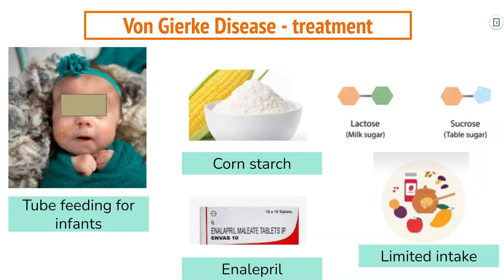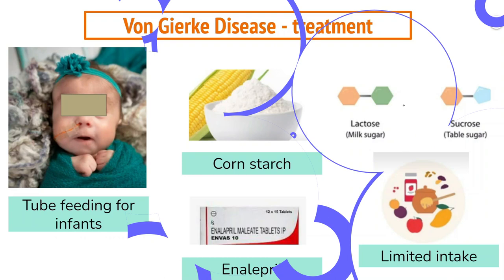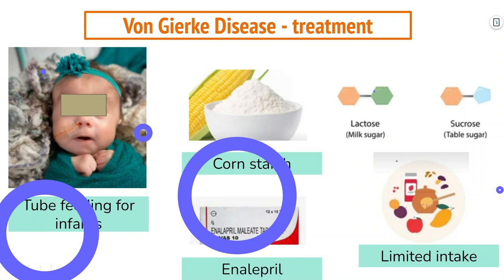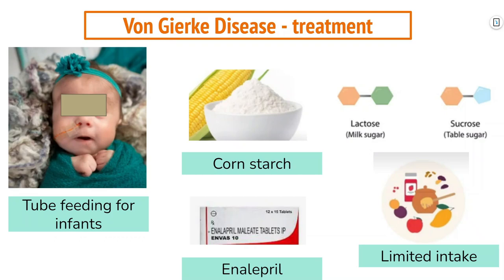The goal of treatment in this disorder is to maintain blood sugar. Frequent feeds are essential in infancy; overnight nasogastric drip feeding may be required to maintain blood sugar. An uncooked cornstarch-based diet is used in older children. Medium-chain triglycerides improve growth. Lactose, sucrose, and fructose should be restricted in the diet as they are metabolized by the same enzyme. ACE inhibitors like enalapril are used in cases of microalbuminuria and early renal involvement, which responds very well to enalapril. In advanced disease, liver transplant is the mode of management.